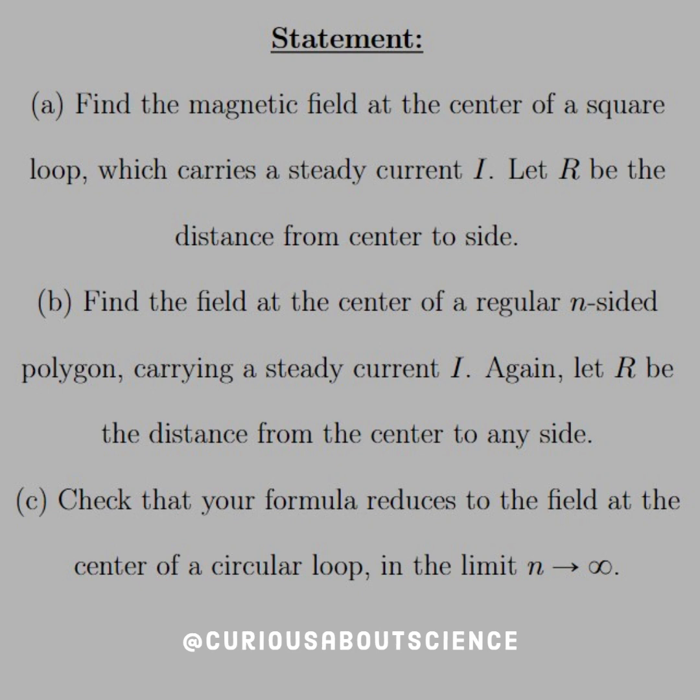Our statement reads: A, find the magnetic field at the center of a square loop, which carries a steady current I. Let R be the distance from the center to the side.